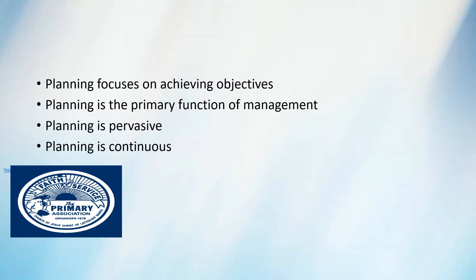The first feature is planning focuses on achieving objectives. While we studied the importance of planning, we saw that we have to first set the goals. We set the objectives first, and then we plan according to those particular objectives. So planning focuses on achieving the objectives of the organization. Ultimately, why are we planning? So that the objectives of the organization are achieved. The very first feature of planning is that it focuses on achieving the objectives.